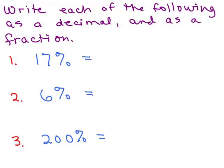Here are some problems to try — pause the video and try these three. When writing as a fraction, it could end up being a whole number or a fraction you need to reduce. Let's go through them. 17 percent: that's 17 divided by 100, so move the decimal 2 to the left — you get 0.17. 6 percent: move the decimal 2 to the left, leaving space for the zero — that's 0.06. 200 percent: move the decimal 2 to the left — that just gives you the number 2. It's a whole number; you could write it as 2.0, but it's essentially just 2.